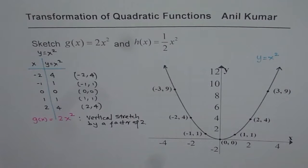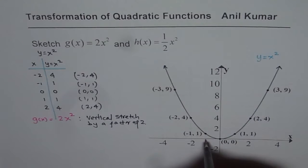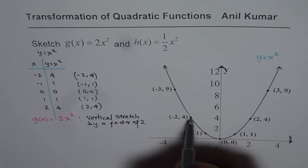Now from the original graph for the same x value the y value has been increased 2 times. So we will multiply each y value by 2. So let us start from this point. Here y value is 4.